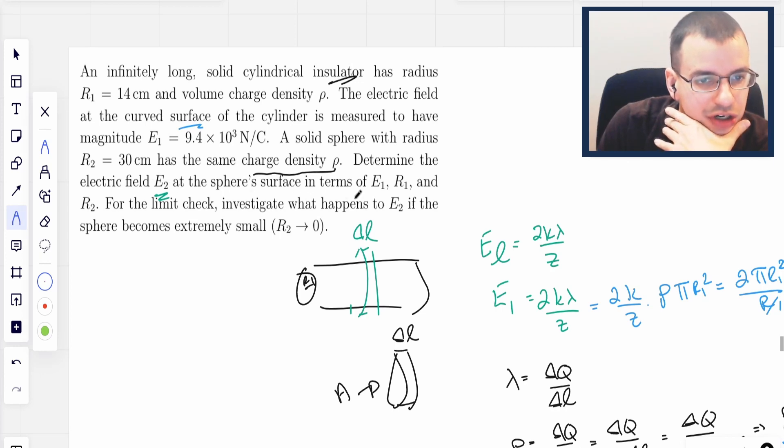For the limit check, investigate what happens to E2 if the sphere becomes infinitely small, R2 goes to zero.